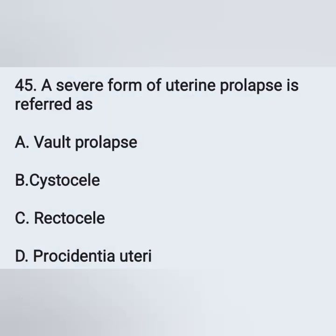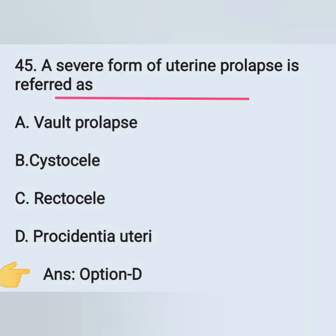Question 45: A severe form of uterine prolapse is referred to as — options: option A, vault prolapse; option B, cystocele; option C, rectocele; option D, procidentia uteri. The severe form of uterine prolapse is procidentia uteri. Option D is the correct answer.